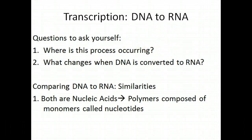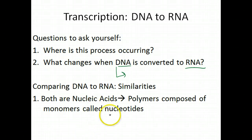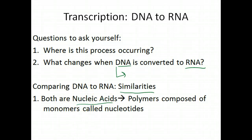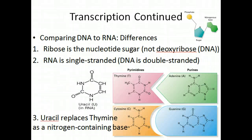What changes occur when DNA is converted to RNA? DNA is deoxyribose nucleic acid, so it has a different sugar. There are also other different properties when you compare DNA to RNA. Similarities first: both DNA and RNA are nucleic acids — polymers consisting of various nucleotides that encode information passed on from generation to generation, say from a parent to a child.